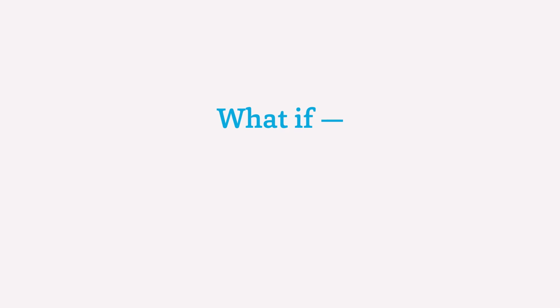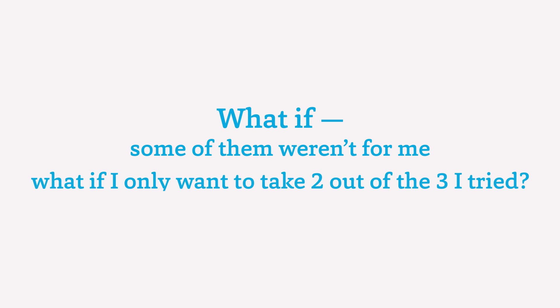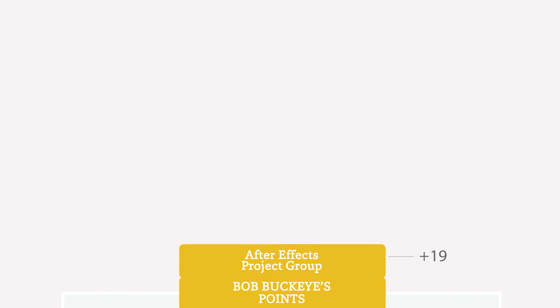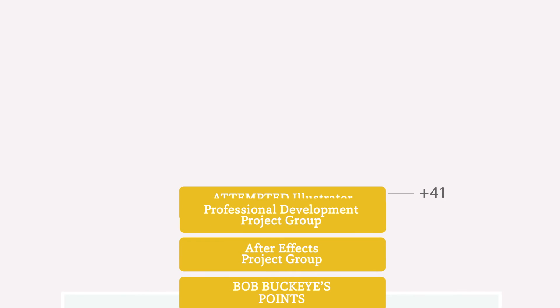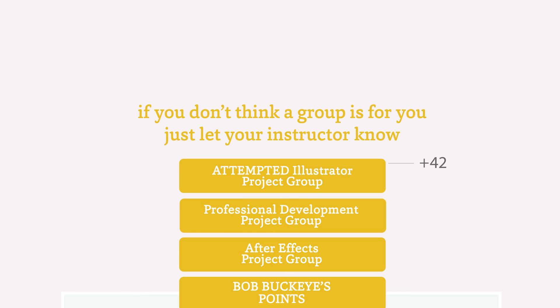What if I tried out a few project groups the first week and some of them weren't for me? What if I only want to take two out of the three I tried? You will still get credit for attempting a project group, but if you don't think a project group is for you, just let your instructor know and you will be dropped.